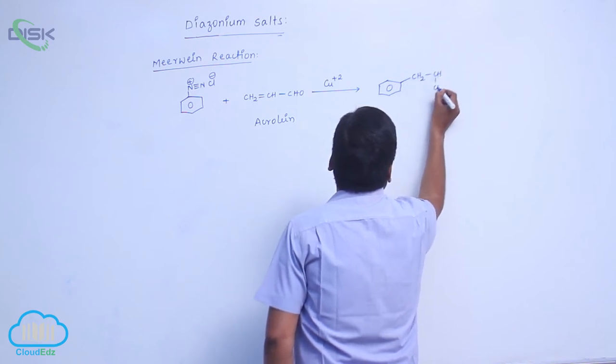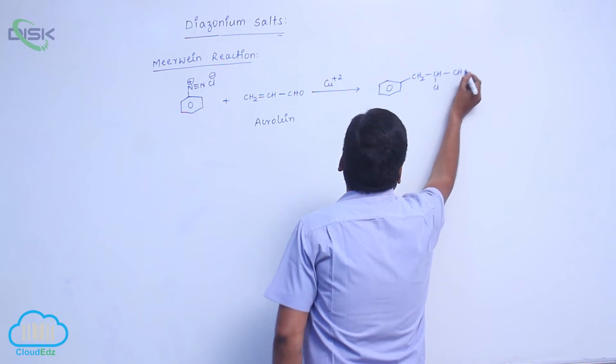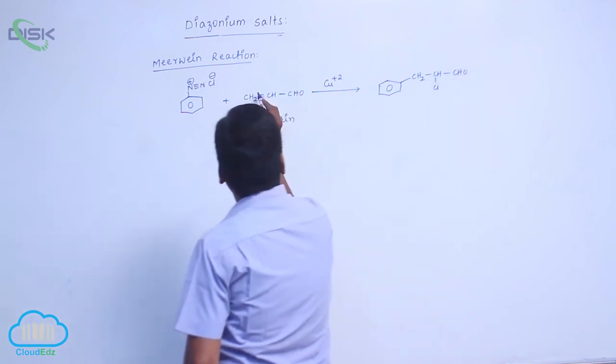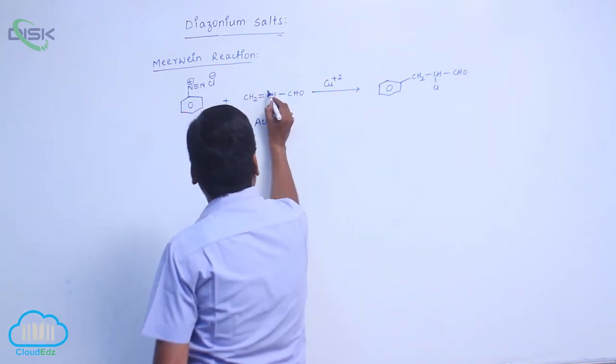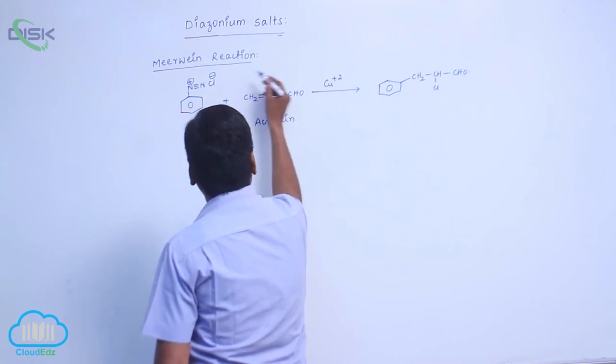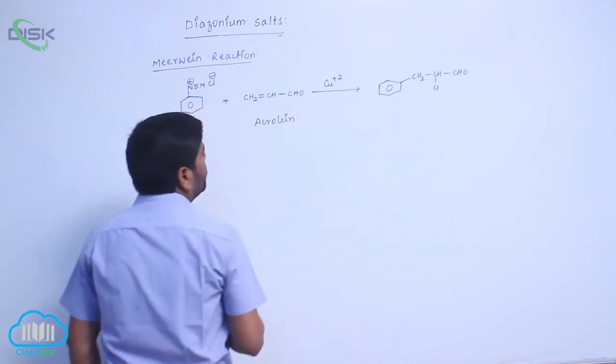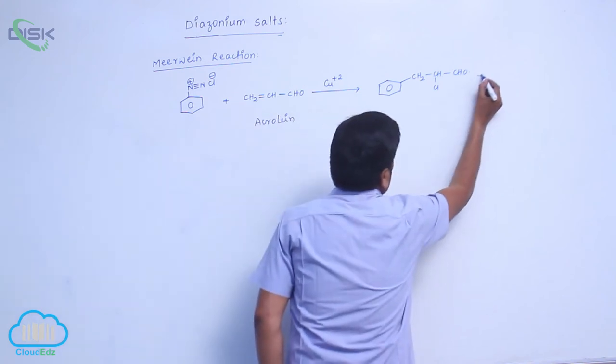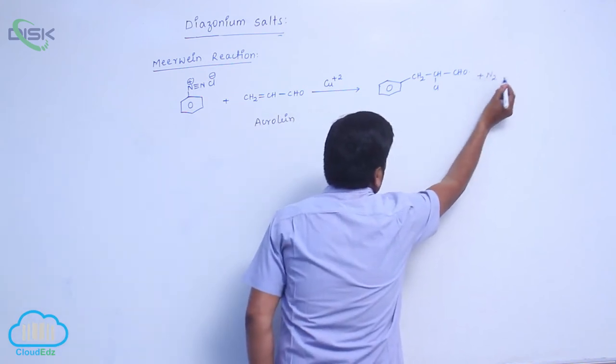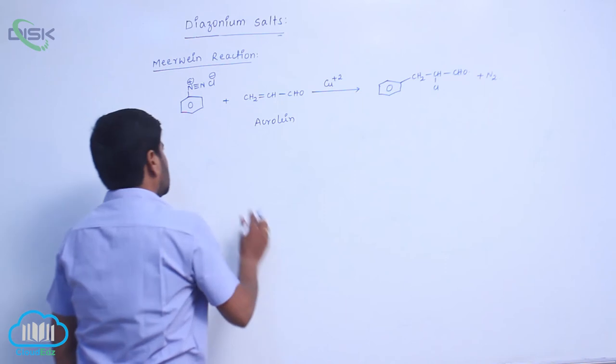CHCl, then here is what. The electron load goes here, here is positive charge then which is added. Cl minus is added, loss of which molecule takes place, N2 molecule. Same way...